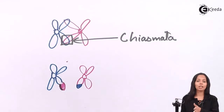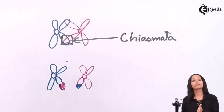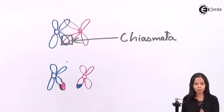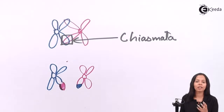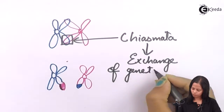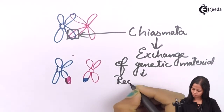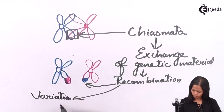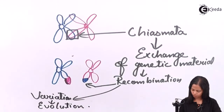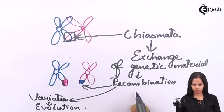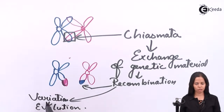Recombination results in variation, and lots of variation results in evolution. This is the most significant step because we get the best or worst quality evolved from this — in short, we get changes in characters. This is how recombination looks, and variation results into evolution.